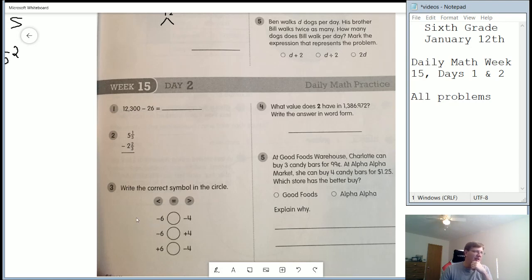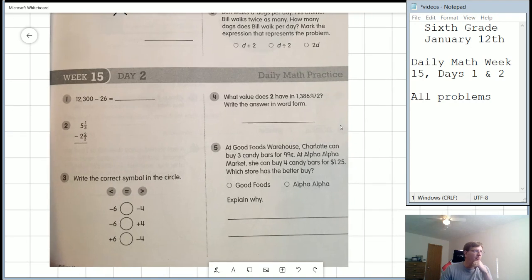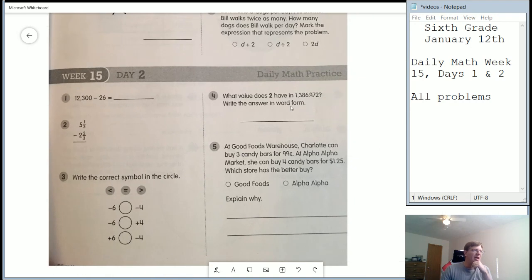Number three, we want to figure out is the value of negative six greater than, less than, or equal to this. Is this one greater than, less than, or equal to this? And then, and so forth. Number four, what is the place value amount of the two in this particular number? And they want you to write that in word form. So we are going to have two, what?